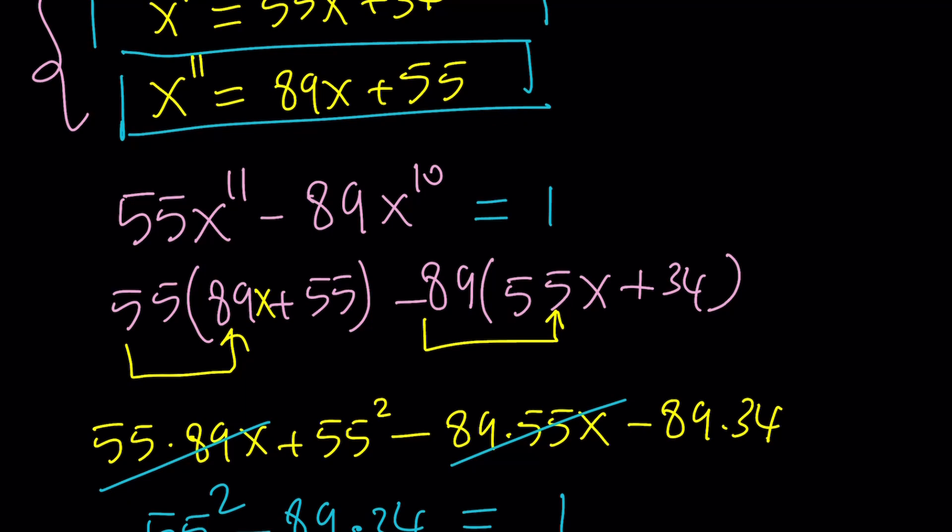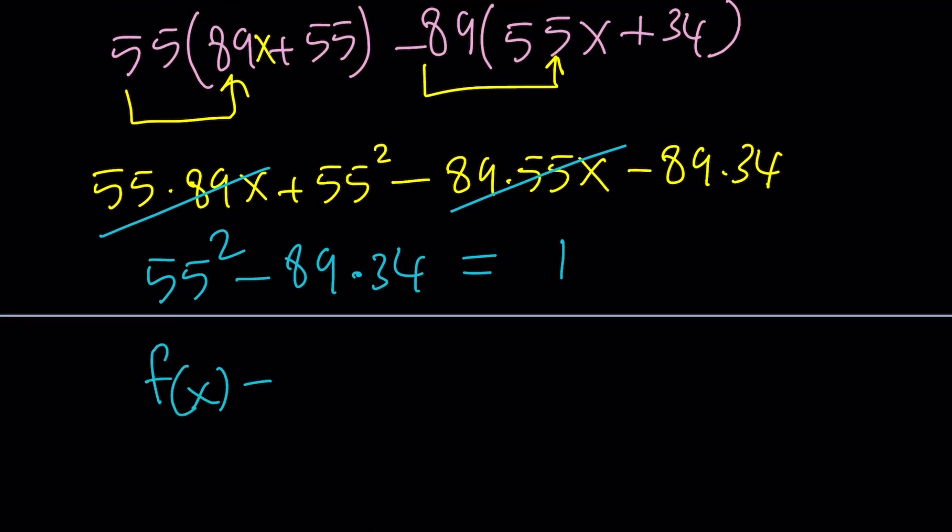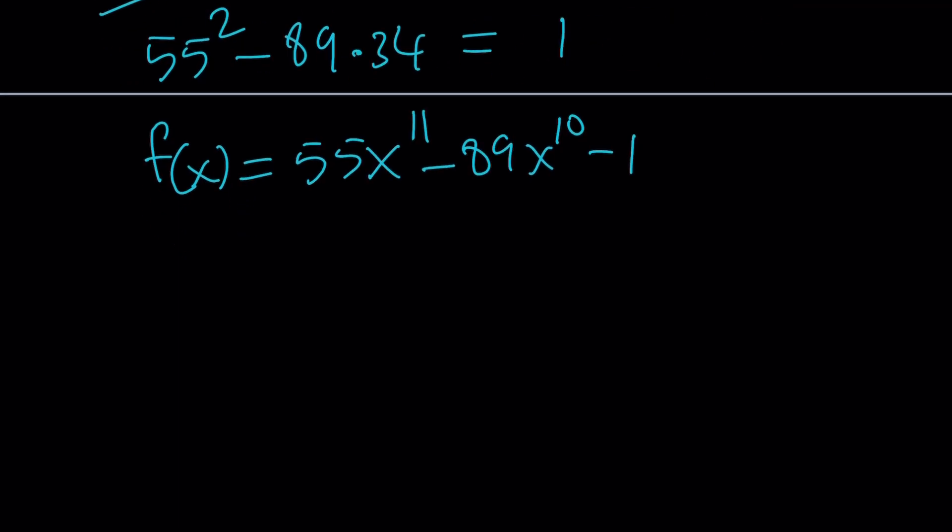So here's the thing. If you write this as f of x equals 55x to the 11th minus 89x to the 10th minus 1, obviously, I'm looking for the x-intercepts of this equation. But let's differentiate this function. If you differentiate it, you're going to get 55 times 11 times x to the power 10 minus 89 times 10 times x to the power 9. And the derivative of 1 is 0.